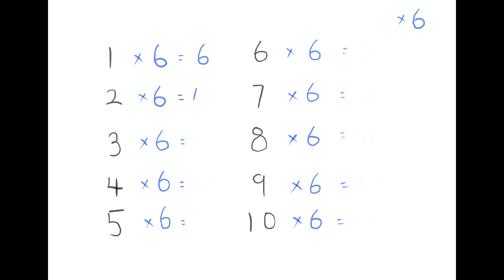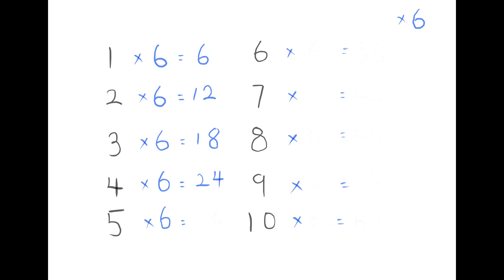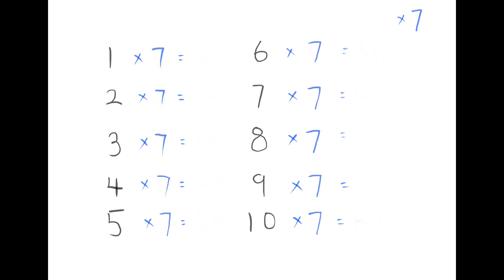1×6 is 6, 2×6 is 12, 3×6 is 18, 4×6 is 24, 5×6 is 30, 6×6 is 36, 7×6 is 42, 8×6 is 48, 9×6 is 54, 10×6 is 60.